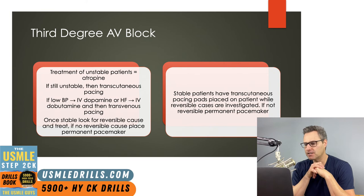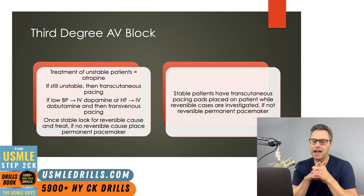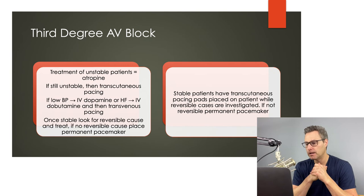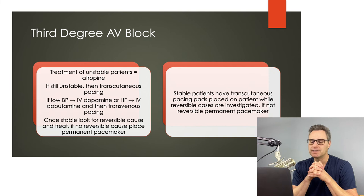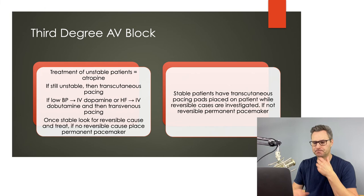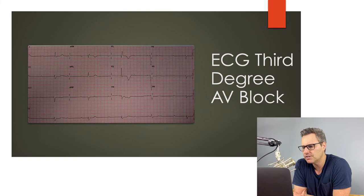For unstable patients with third degree AV block: give atropine, then transcutaneous pacing if still unstable; IV dopamine for low BP or IV dobutamine for heart failure, then transvenous pacing. Once stable, look for a reversible cause — if none identified, place a permanent pacemaker. Stable patients should have transcutaneous pacing pads placed while exploring a reversible cause; if not reversible, proceed to permanent pacemaker. The ECG shows P waves with no relation to QRS complexes.